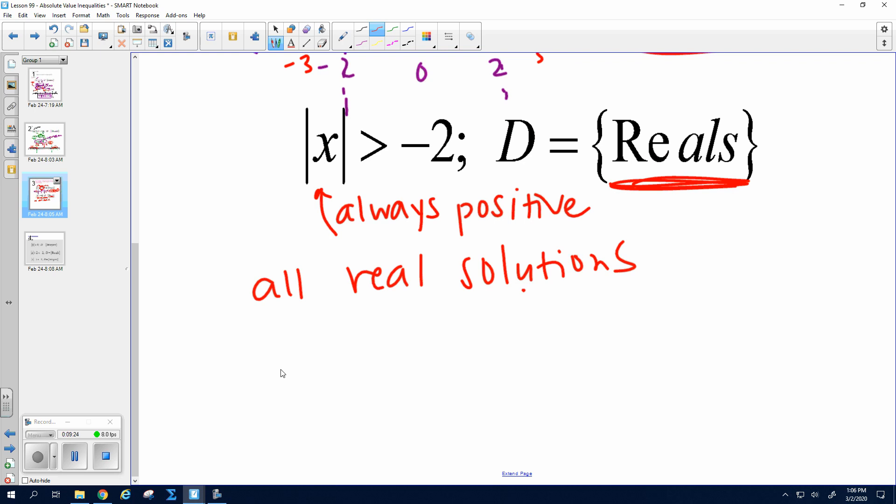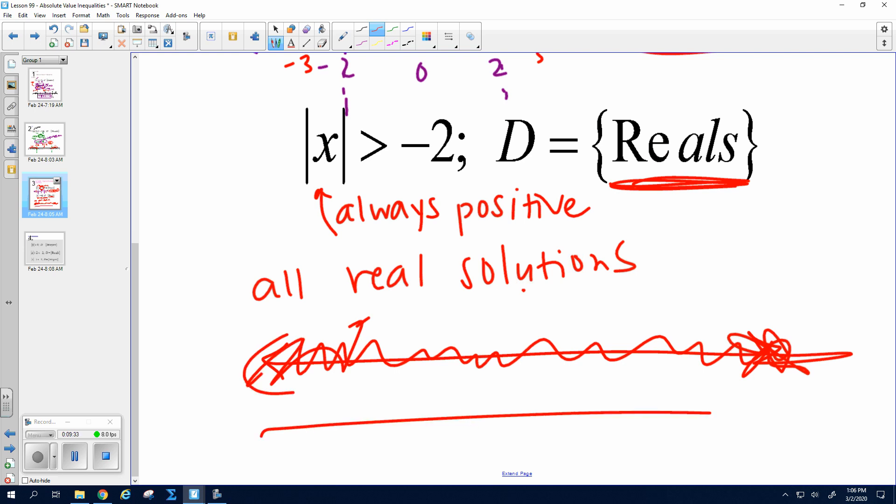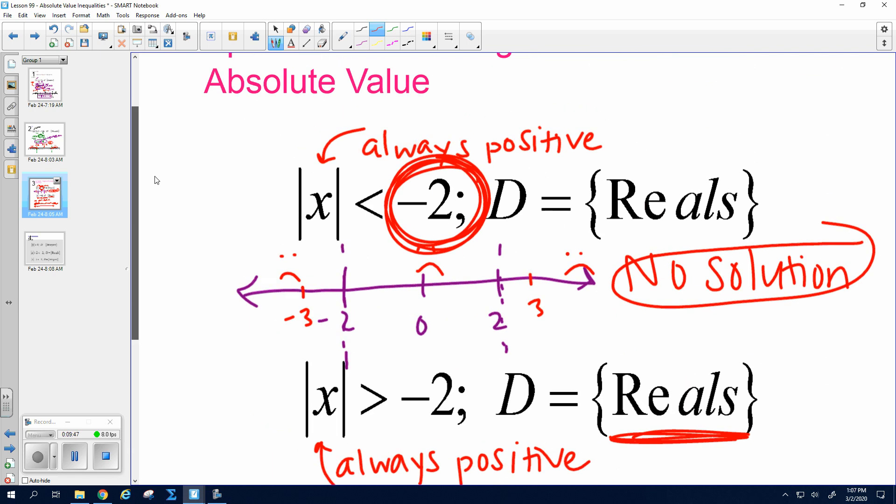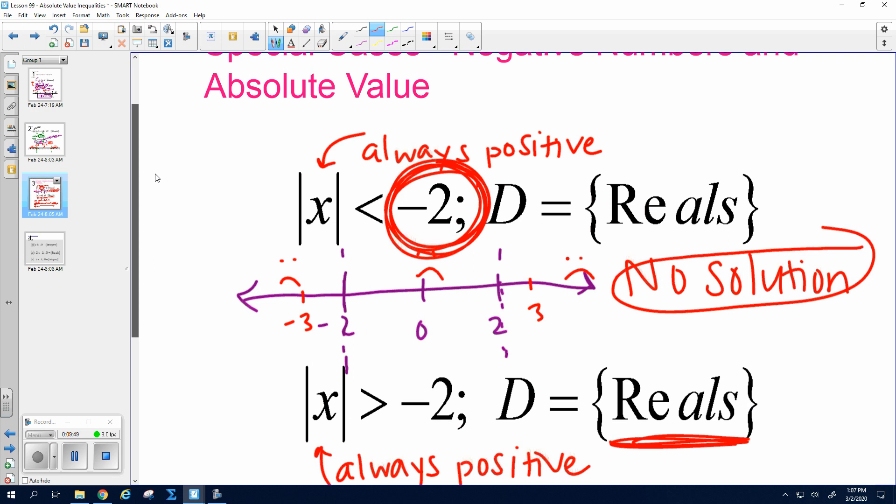So this one is all real solutions or it would be all integers if your domain was integers. And you would do an entire number line shaded because everything works. Okay. Or if it was integers, you would do every single integer if it was integers. Does that make sense? I think you should do a graph. This one, you don't really need a graph. It's an empty graph if you do it. But it's probably better to just write no solution. Okay.